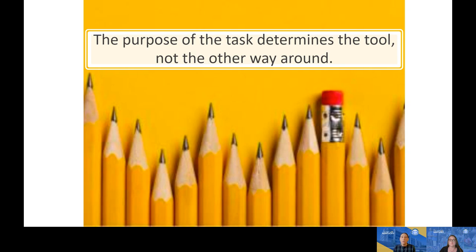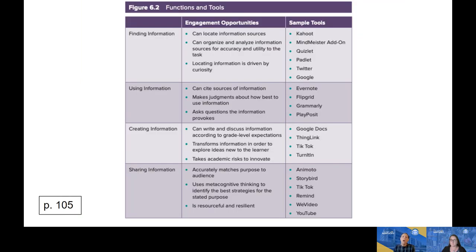In Module 6, it talks about when designing tasks it is important that the purpose of the task determines the tool students will use — not the other way around. Sometimes we're busy searching for innovative, creative tools and let the tools drive the task, which is not going to increase student motivation. We want students to select the right tool based on the purpose of the task. To help with that, on page 105 the authors discuss the four functions of learning: finding information, using information, creating information, and sharing information. Teachers need to find one tool students could use to support each of those learning functions.